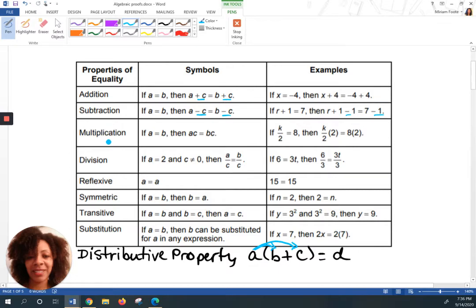Multiplication, using the same scenario of A equals B. So if A equals B, the only thing that happened is both A and B were multiplied by C. Remember, if you have a variable next to another variable, that means multiplication. Same thing if you have a number next to a variable. So this is what that would look like. If your original equation was K divided by 2 equals 8, then they wanted you to multiply both sides by 2. The fraction multiplied by 2 is set equal to 8 multiplied by that same number.